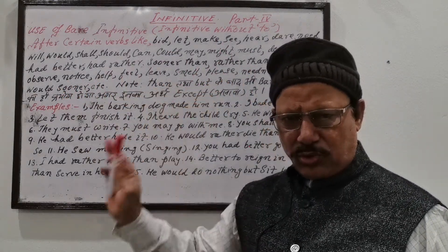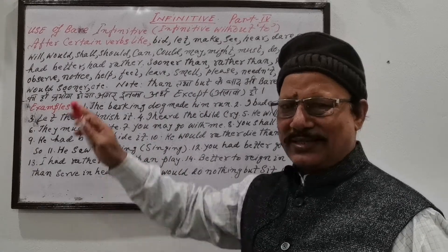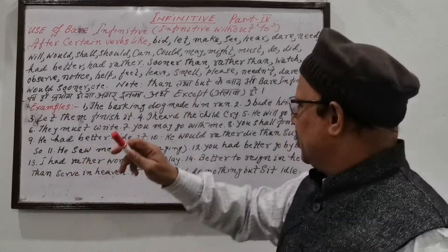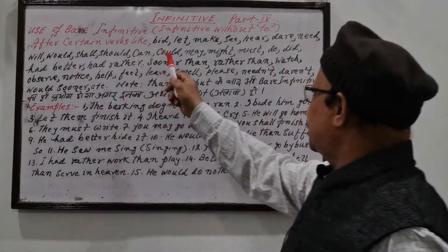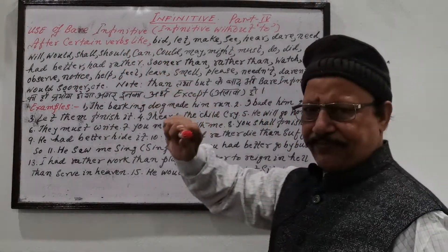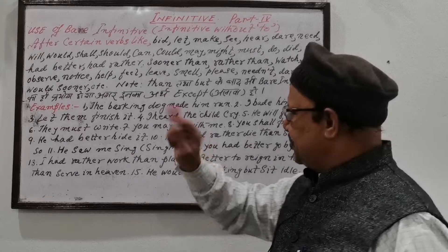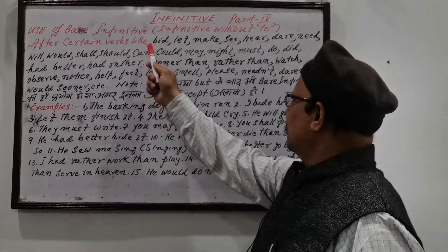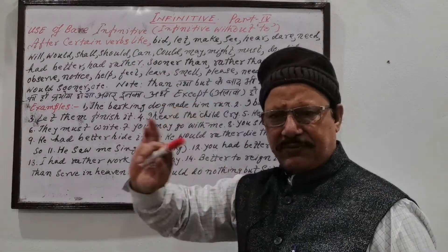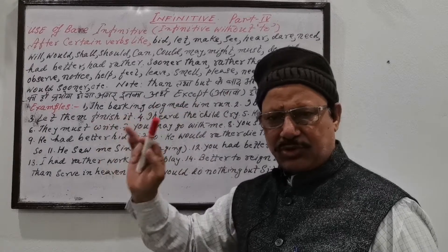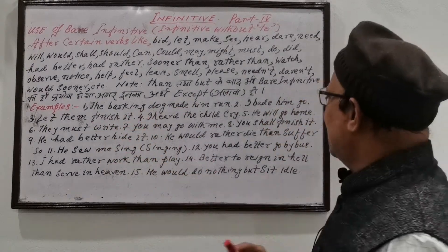No 'to' preposition will be used after these words. After certain verbs — there are some verbs after which bare infinitive, meaning infinitive without the preposition 'to', is not used. What are those words?